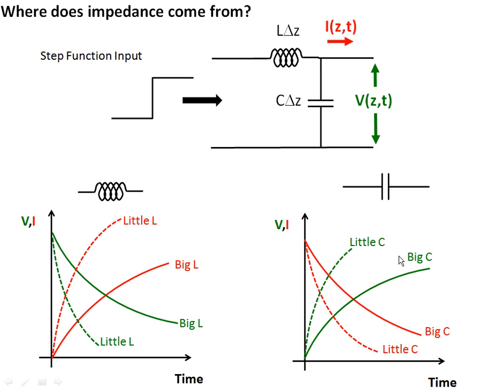So where does this impedance come from? We've talked about it and derived it mathematically, but that never really satisfied me to look at some equations to understand it. So let's do a thinking, a Gedanken-type experiment, where we put the sort of standard electrical engineering demo of a step input, or a step function input, into our distributed transmission line models. We've got our inductance here, our capacitance here, and we want to know the current and voltage as a function of this.